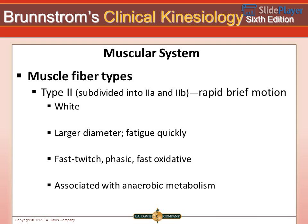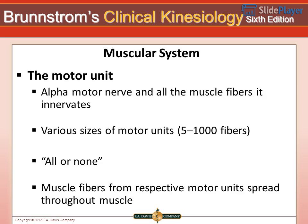Type II fibers are subdivided into IIA and IIB. They are associated with rapid, brief motion, are white with a larger diameter, and fatigue quickly. They are also known as fast twitch, phasic, or fast oxidative fibers, and are associated with anaerobic metabolism.